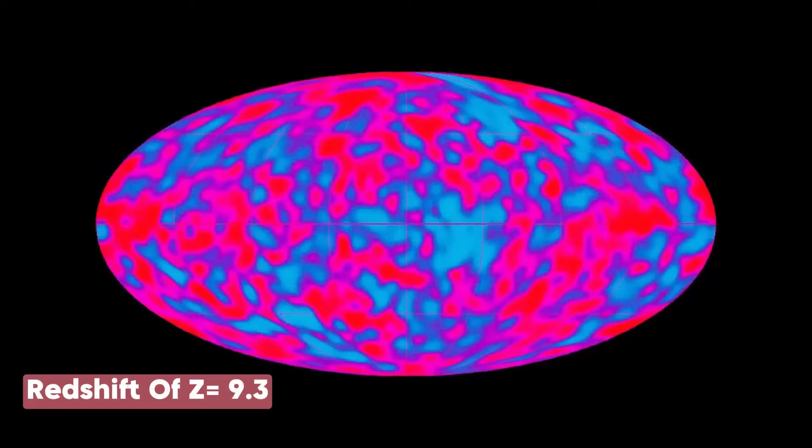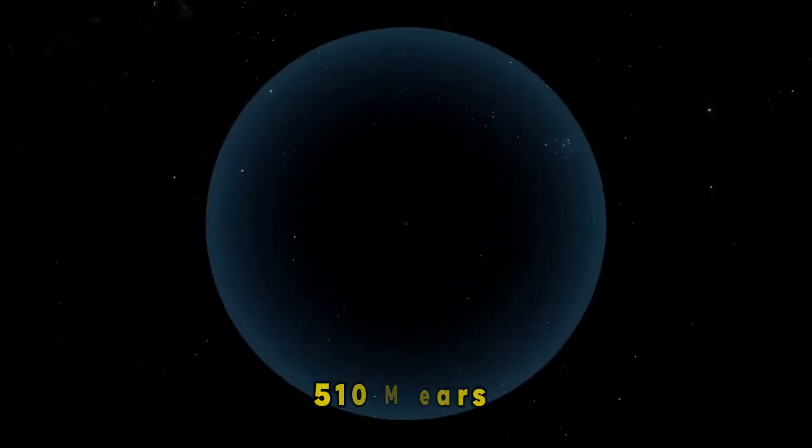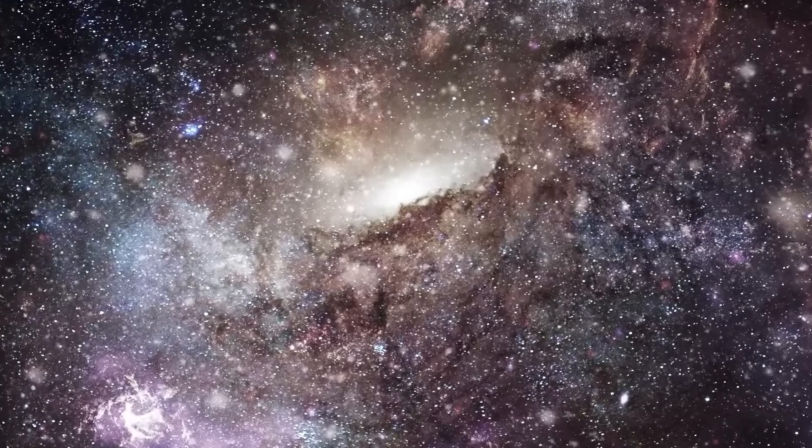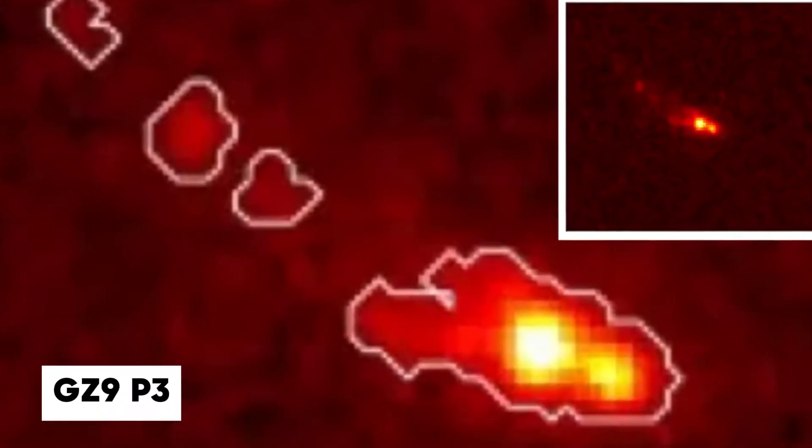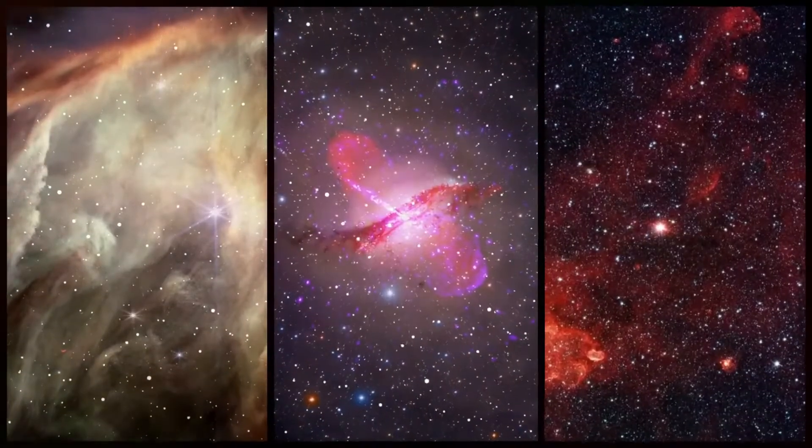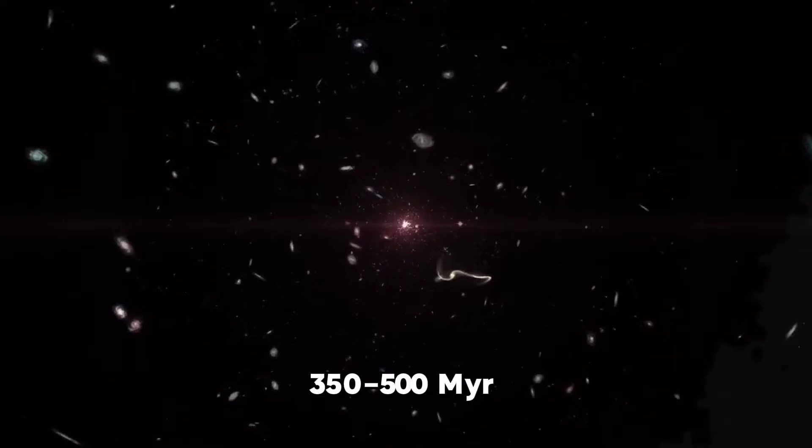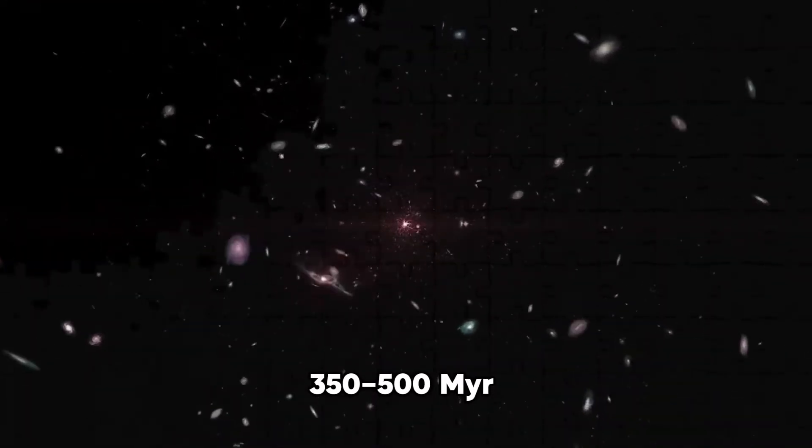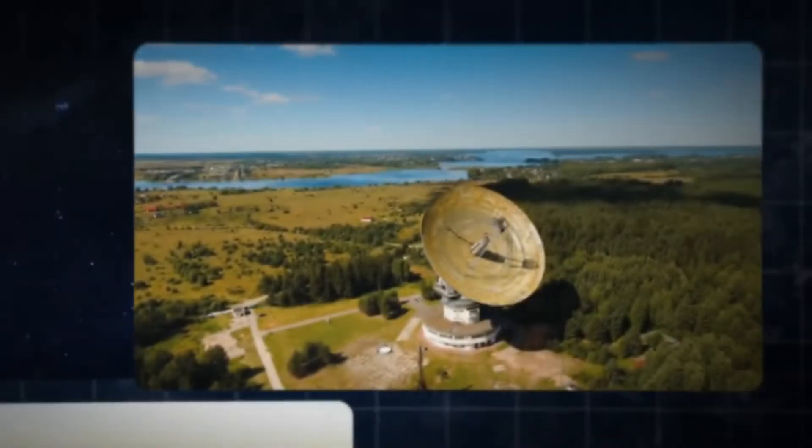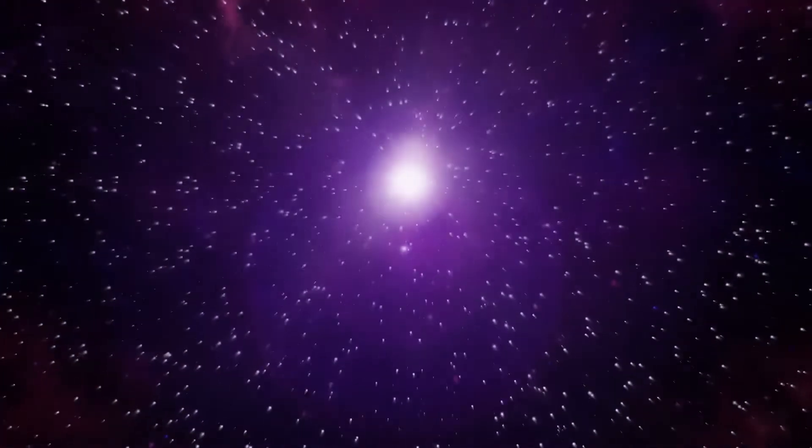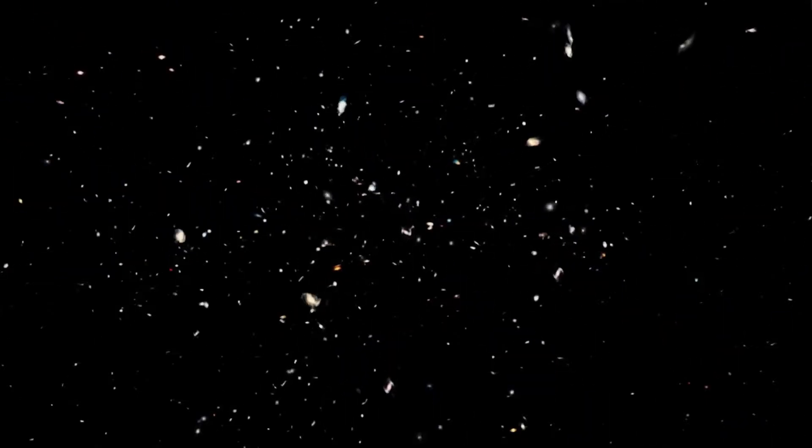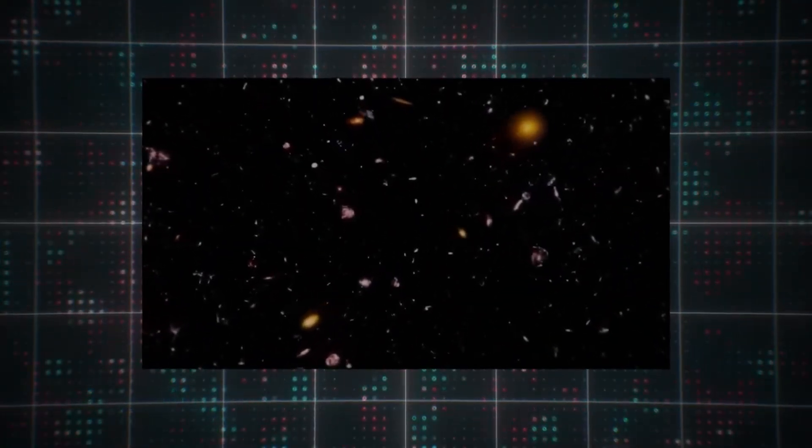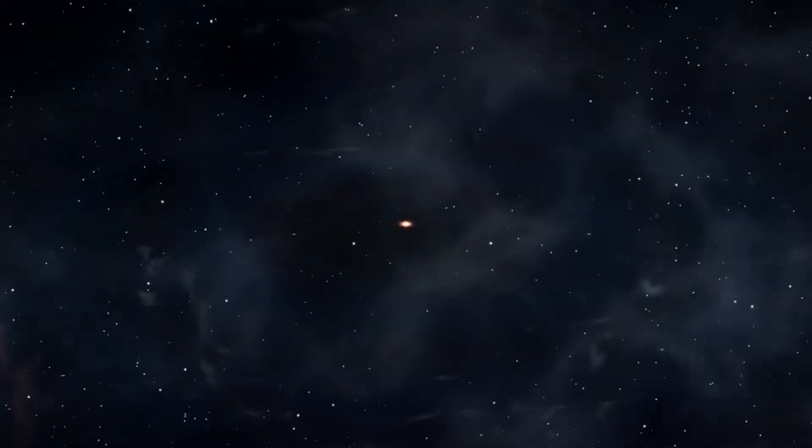At a redshift of z=9.3, or just 510 million years after the Big Bang, we can view this galaxy which is known as GZ9P3. Although we have detected several galaxies in the 350-500 million years after Big Bang era, none of them have been seen with the same magnitude as this one. These results suggest that the galaxy's stars generated at a faster and more efficient rate than previously thought in order for it to reach its present size.